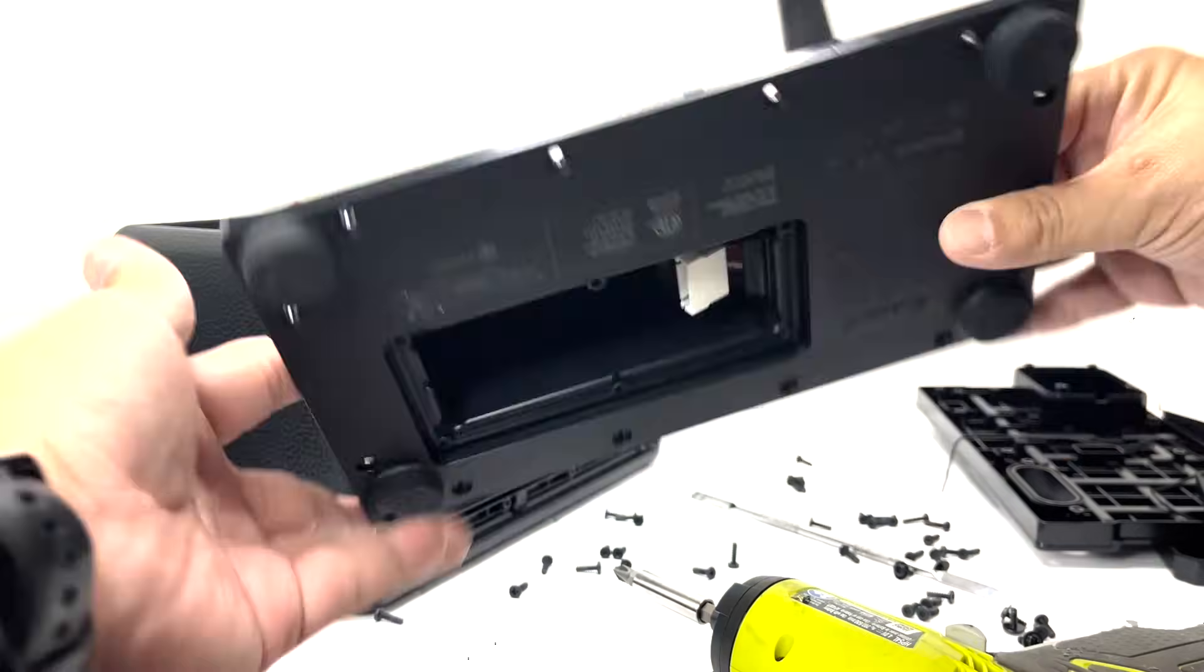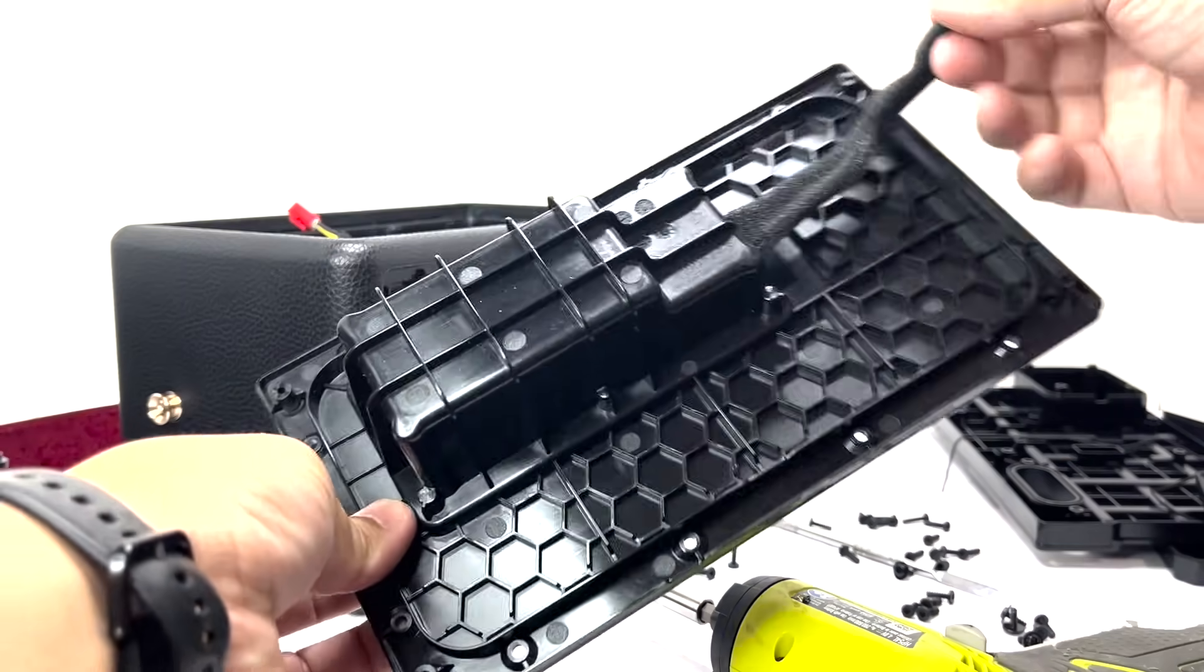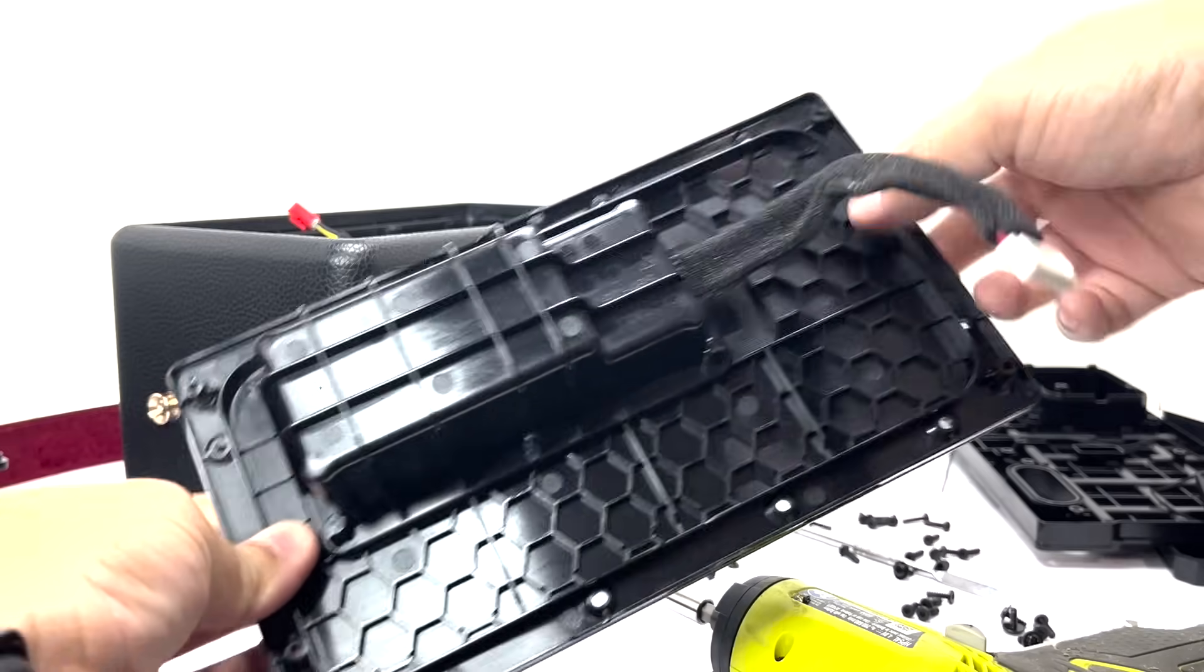And here we have the bottom panel, which is primarily designed to secure the battery. It contains only the cable linking the battery to the motherboard.